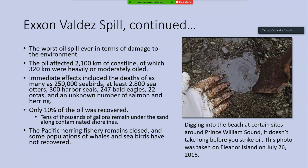There were immediate effects, including the deaths of as many as 250,000 seabirds, almost 3,000 sea otters, 300 harbor seals, 247 bald eagles, 22 orcas, and an unknown number of salmon and herring. And those are just the things we can count — it was likely causing death even beyond those numbers for many organisms.